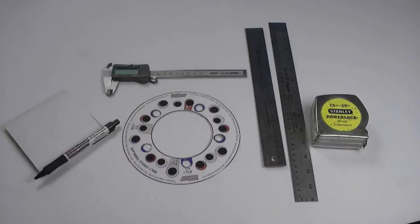Before you get started, we recommend that you gather the following: an assistant, a tape measure, two straight edges, a bolt circle template which you can download in PDF format from our website, a notepad, a pen, and a digital caliper.